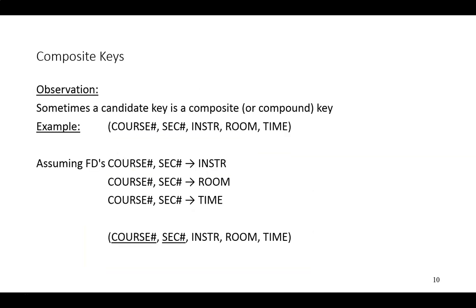Sometimes a candidate key is composite. In this example, we have information about a scheduled offering of a course, a class. To uniquely identify who's teaching the class, we need a combination of the course number and the section number. To uniquely identify the room where the class will be taught, we also need course number and section number, and likewise for the time. So we have multiple attributes that serve as the candidate key and subsequently, in this case, as the primary key.